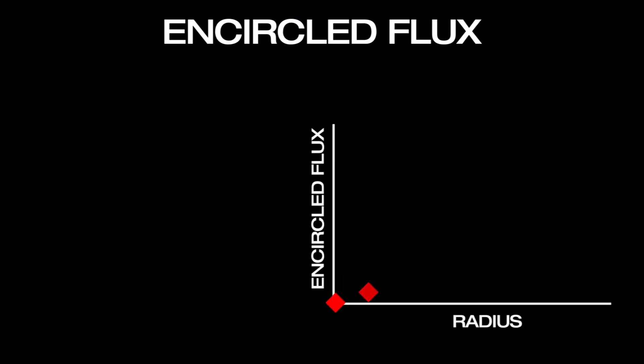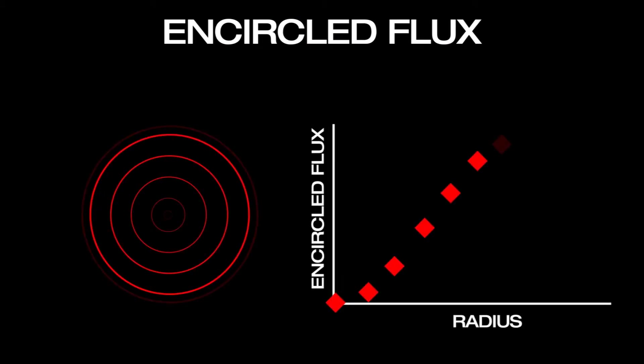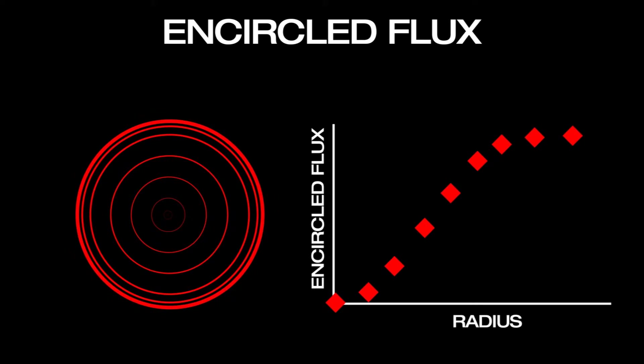It is defined as the proportion of the total optical power carried in the fiber which is contained in a circle of a given radius. A typical plot of encircled flux shows the optical power as a function of radius, starting at the optical center of the fiber.